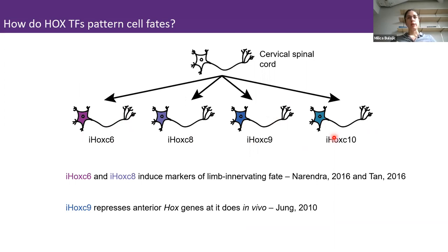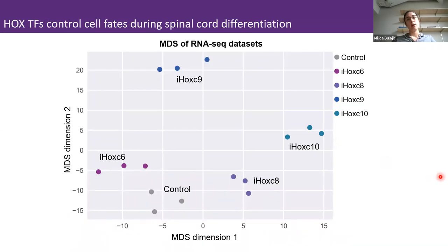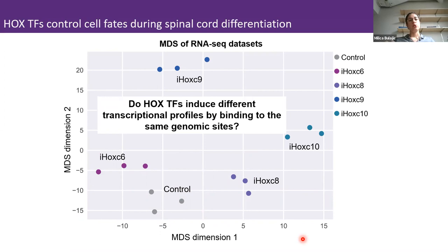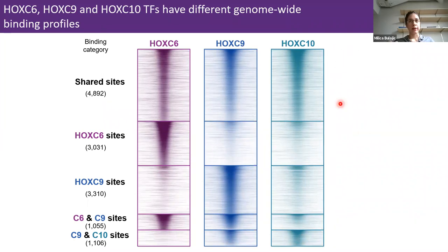We first began by asking globally what happens at the transcriptional level in these inducible Hox lines. Comparing the RNA-seq datasets generated in the inducible Hox lines, they induce distinct transcriptional profiles different from control cells, suggesting they are actually patterning cell fates during differentiation. We then asked: do Hox transcription factors induce these distinct transcriptomes by binding to the same sites in the genome, or do they bind different sites? In these heatmaps, every row is a single binding event centered around the midpoints of the ChIP-seq peaks — where you see more color, there is more protein binding. This analysis revealed that while there is a group of sites shared by the analyzed Hox transcription factors, there are also groups of sites uniquely bound by one or two Hox proteins.